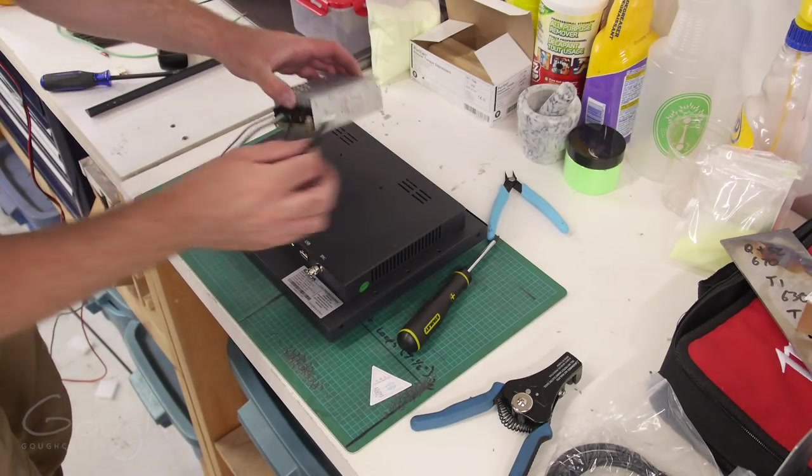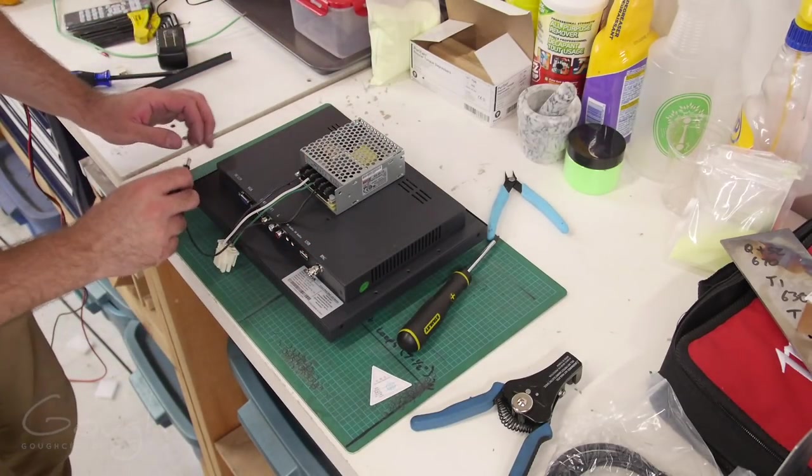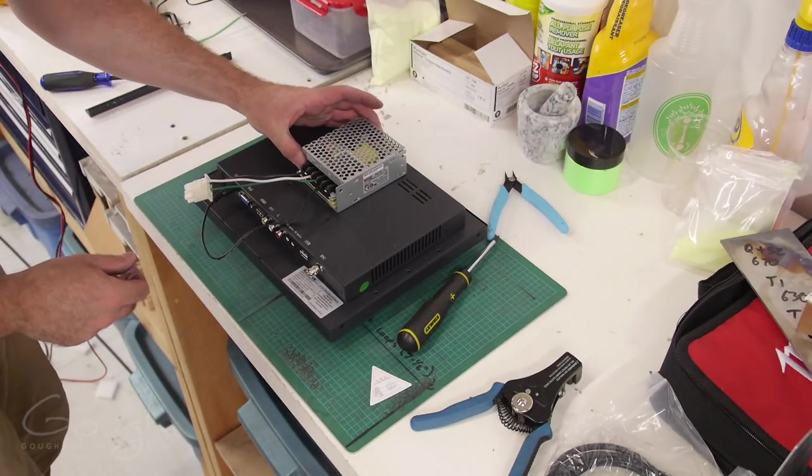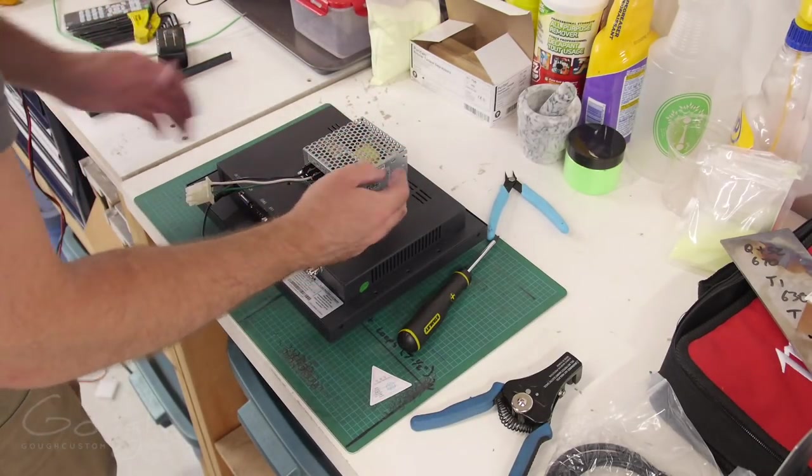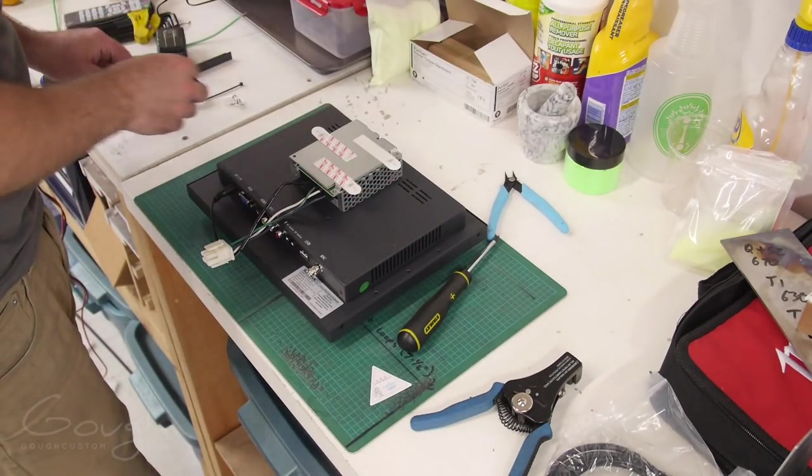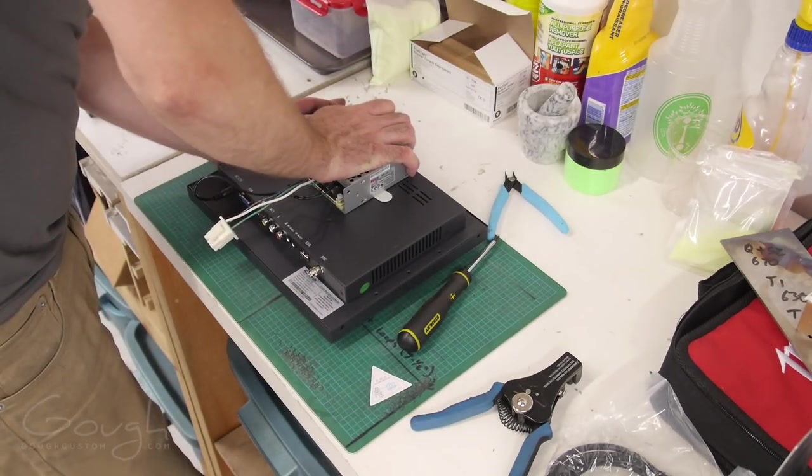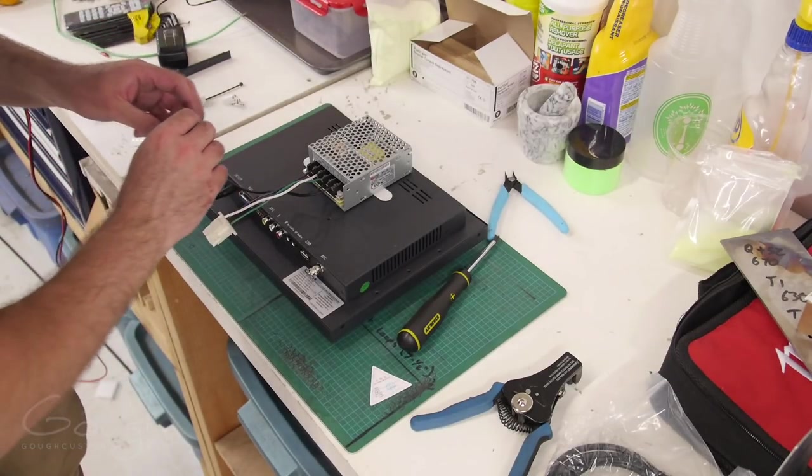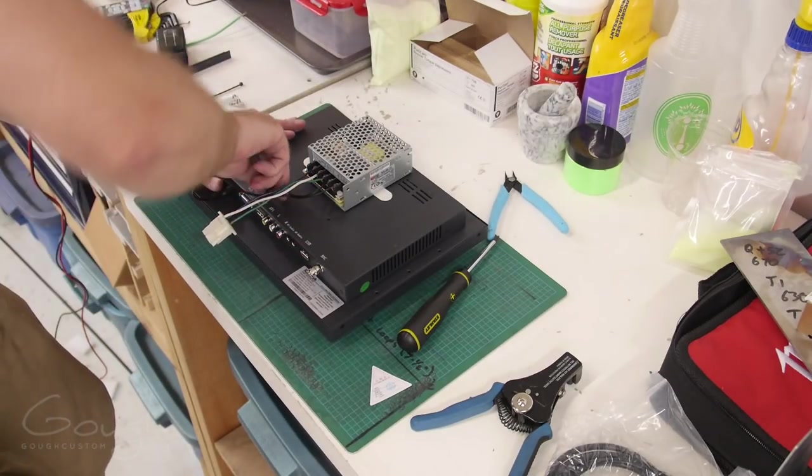So there you go, we've got a nice little modular wiring harness here for the screen. We can just plug the DC jack in right there, and then I'm actually just going to double-sided tape this onto the back of the monitor. That'll be good enough. All right, and to keep the cables nice and tidy we'll just chuck a little zip tie holder on here.